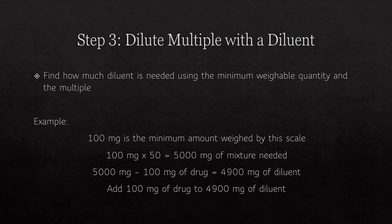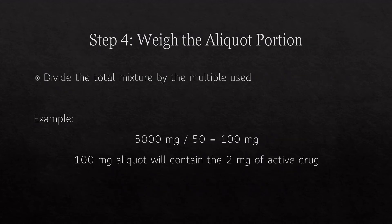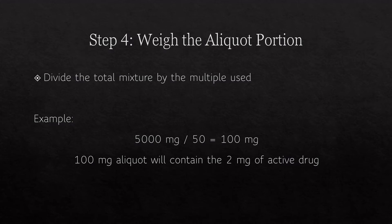You add your 100 milligrams of drug to 4,900 milligrams of diluent to get your total. Step four: weigh the aliquot portion by dividing the total mixture by the multiple used. In our example, 5,000 milligrams total divided by 50 gives aliquots of 100 milligrams each, and each aliquot will contain exactly 2 milligrams of the active drug.